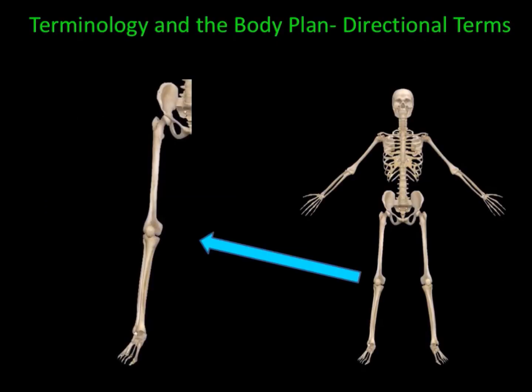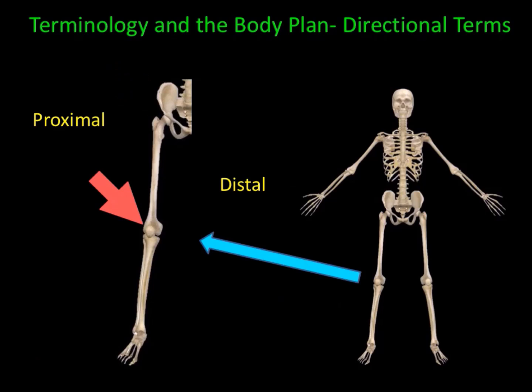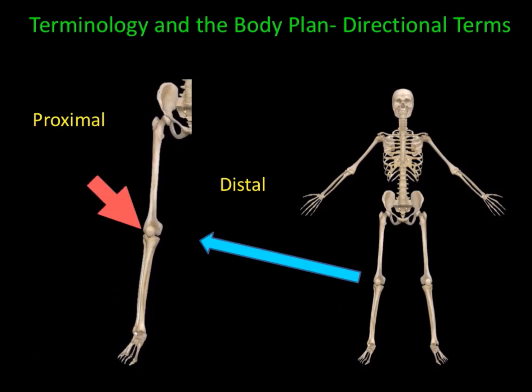Looking at the lower appendage: closest to the trunk is proximal, furthest away from the trunk is distal. For example, the hip is proximal to the knee, and the knee is proximal to the ankle. In contrast, the ankle is distal to the knee and the knee is distal to the hip.